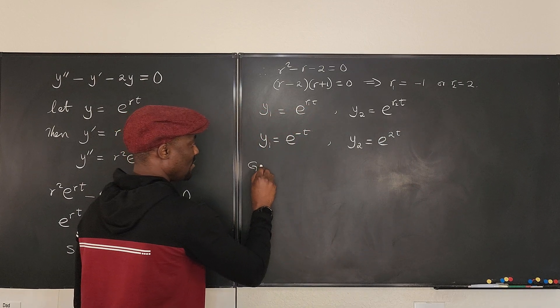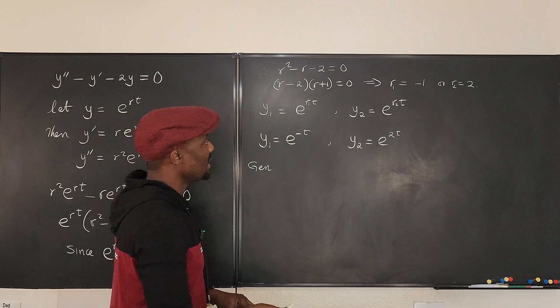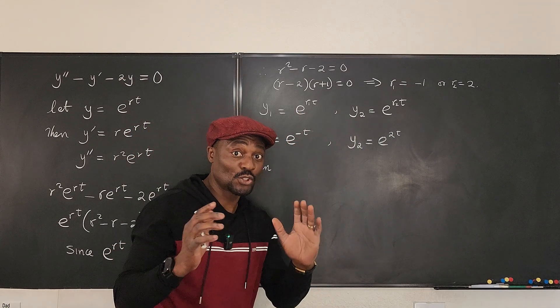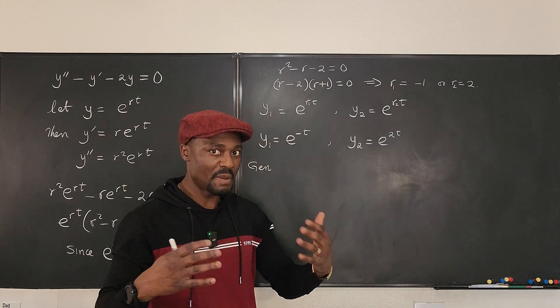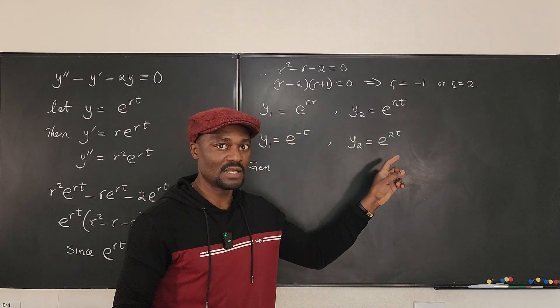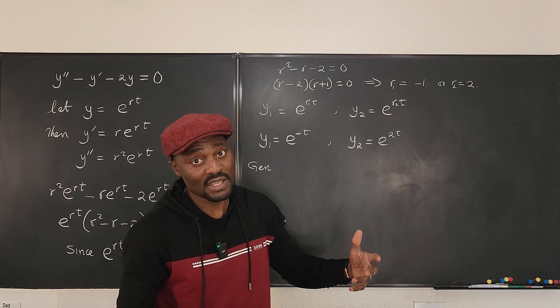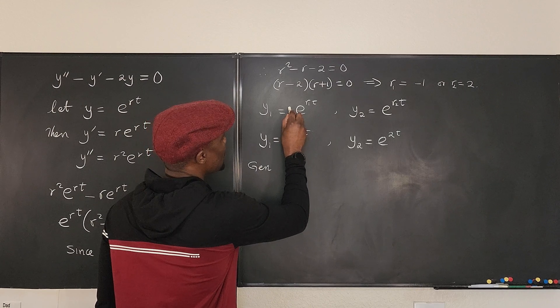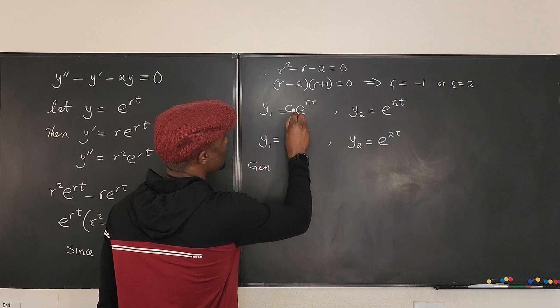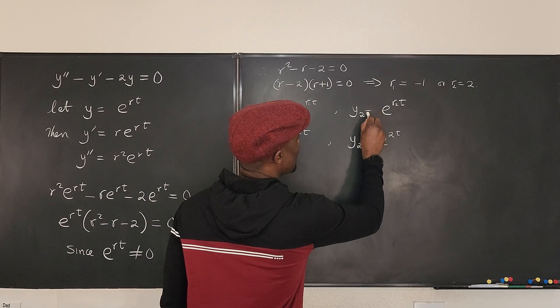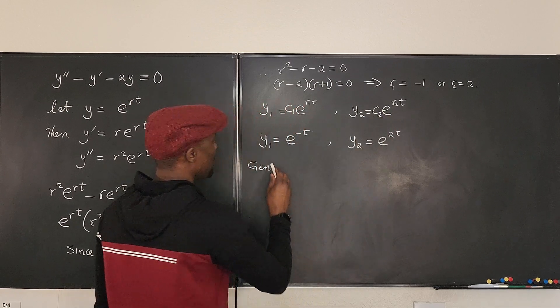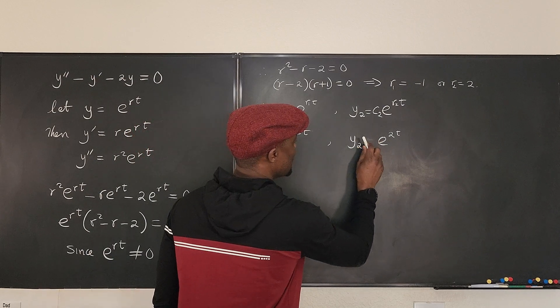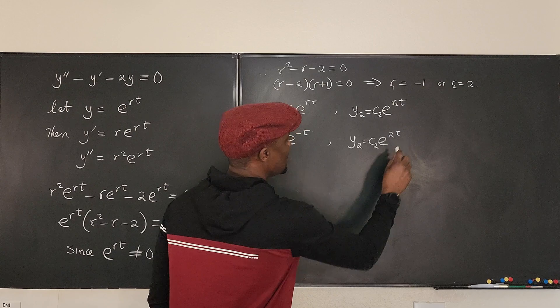Therefore, let's introduce a constant because that constant might help us. Because it's not true that both of these will exist. Sometimes they don't exist, sometimes they exist, so the constant will help us determine if they exist. So we can call this c₁ and call this one c₂. So that we can now say that y₁ equals c₁e^(-t) and y₂ equals c₂e^(2t).